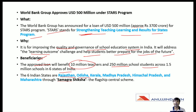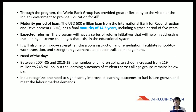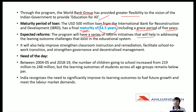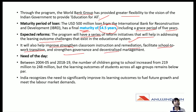The six states are Rajasthan, Odisha, Kerala, Madhya Pradesh, Himachal Pradesh, and Maharashtra. This program has provided greater flexibility to the vision of the Indian government to provide education for all. It will have a series of reform initiatives to address learning outcome challenges, improve and strengthen classroom instruction and remediation, facilitate school-to-work transition, and strengthen governance and decentralized management.